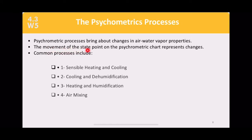Psychrometric chart processes represent the changes in air and water vapor properties, which change temperature and comfort inside a room. The movement of state points represents these changes. You need to find State 1 and State 2 to see the heating or cooling process. There are four common processes: sensible heating and cooling, cooling and dehumidification, heating and humidification, and air mixing.